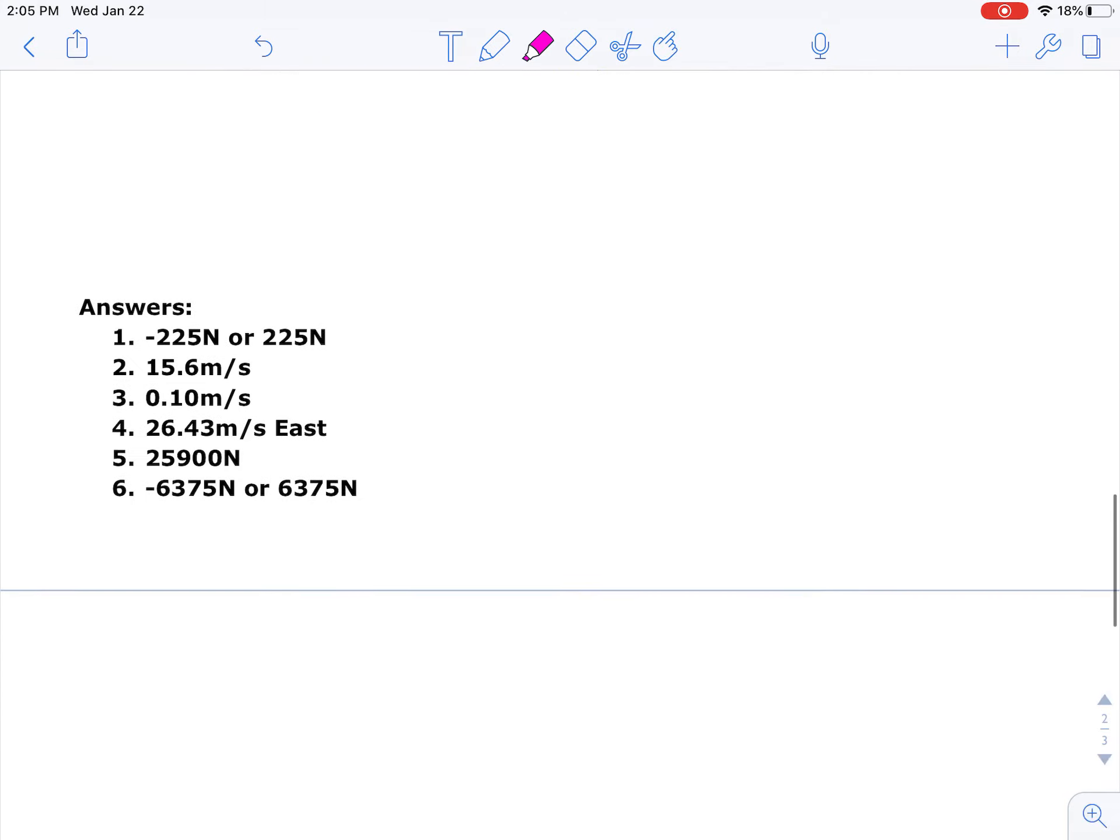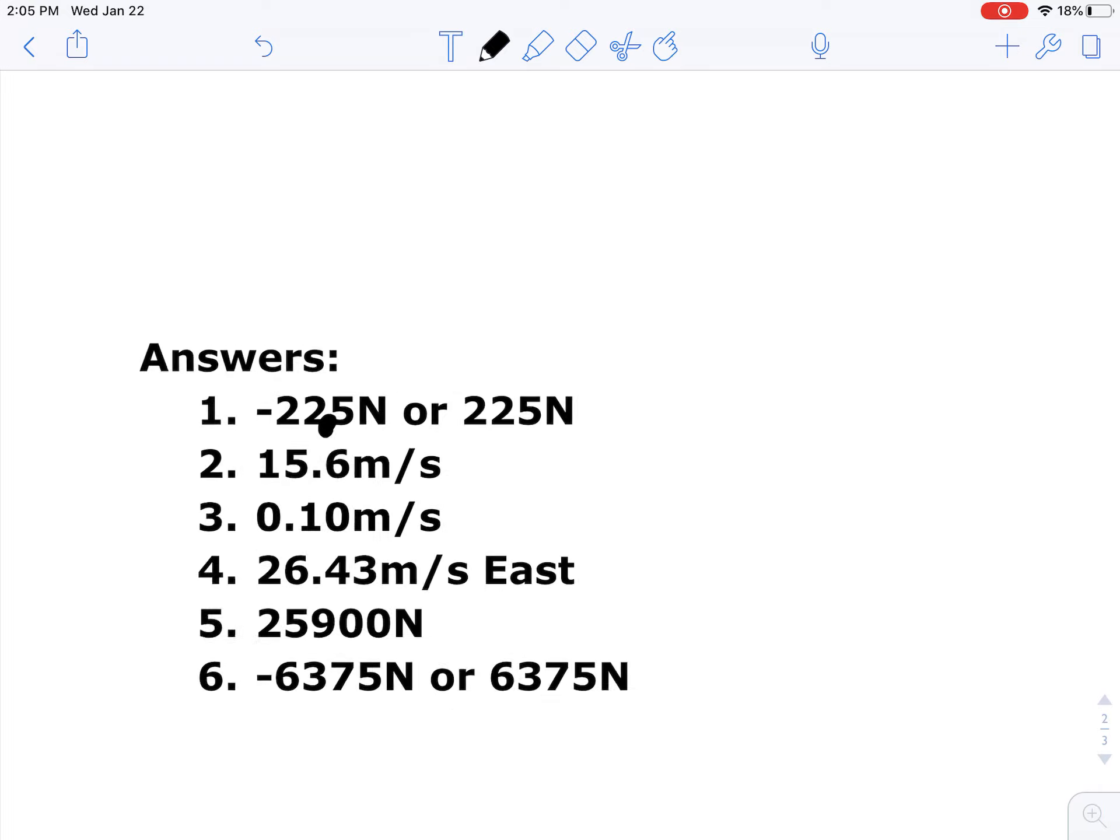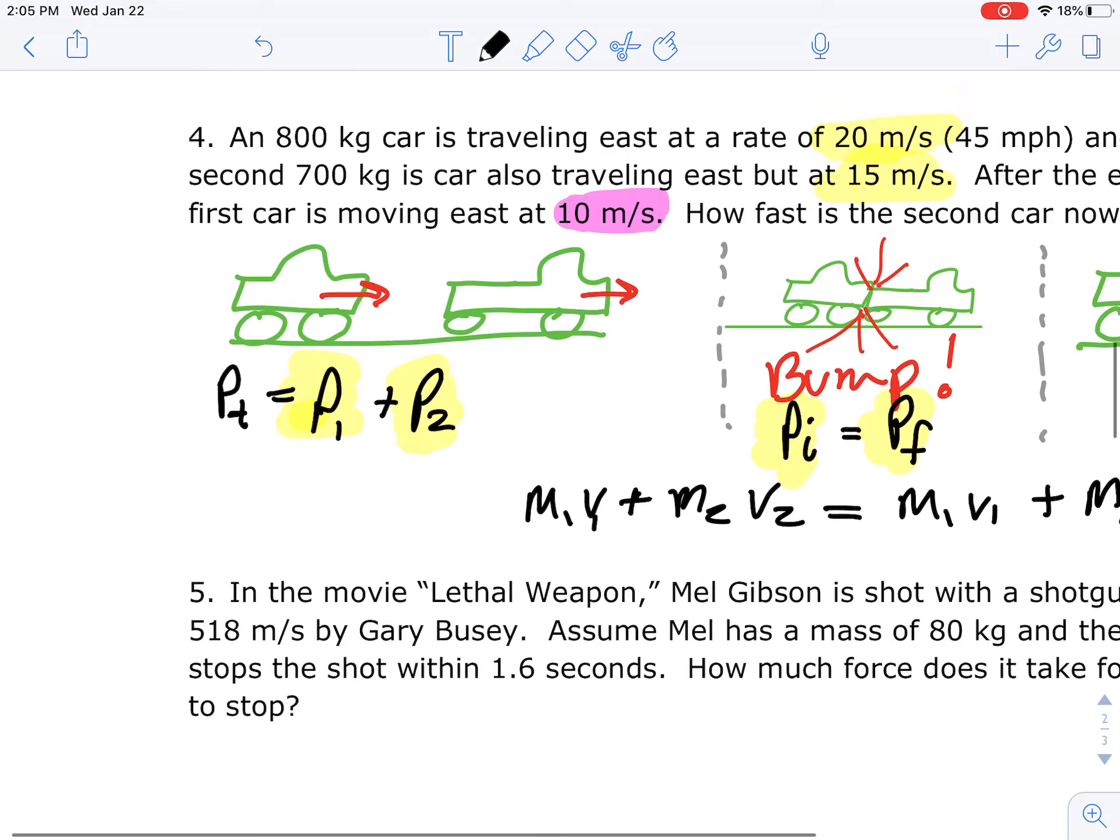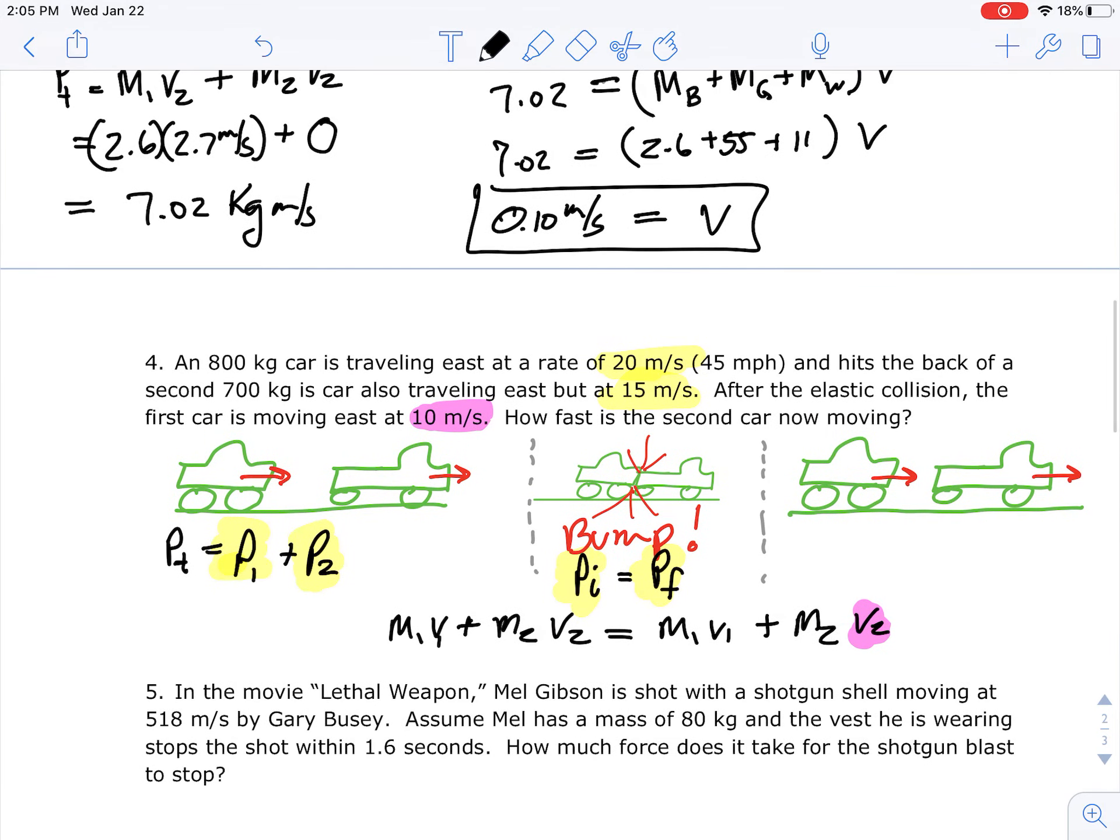The answers are on the bottom. Number one, when I solved it, I got 22.5, so I think that's just a mistake in the key. But the rest are there, so you can double check your answers on the bottom. And you're going to go ahead and turn this document in as credit for that quiz.